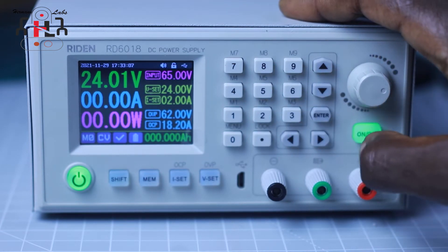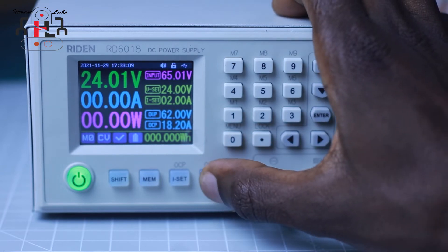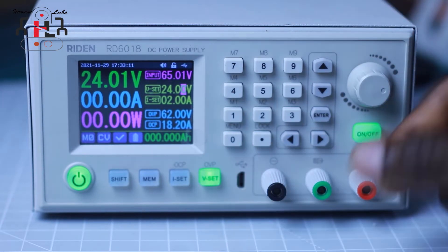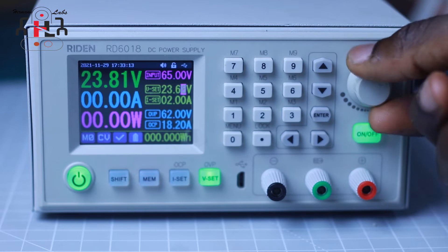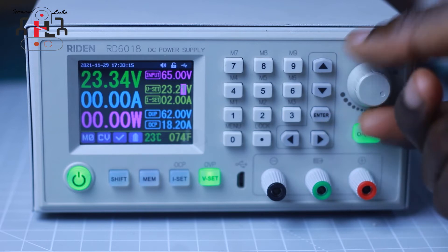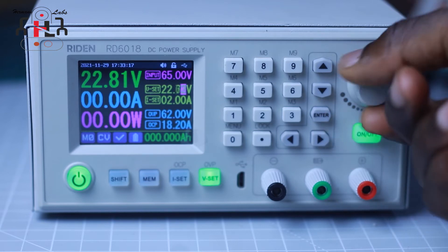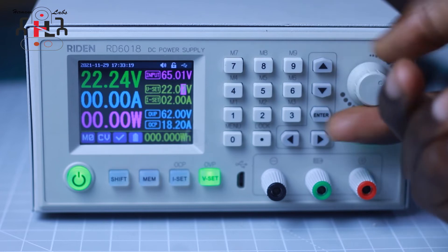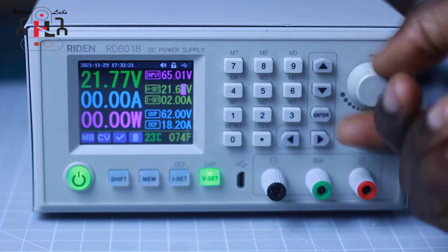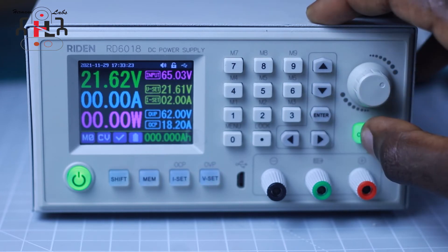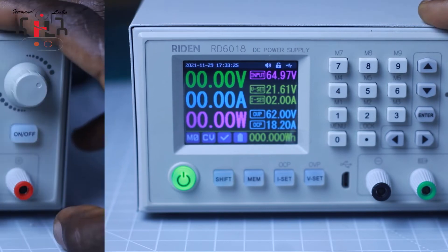To use the rotary encoder when setting the voltage, it is pretty much the same process. The only difference is that instead of using the numbers to set the voltage, we use the knob to rotate to the voltage that we desire. This process to me is very slow and I will never use it.